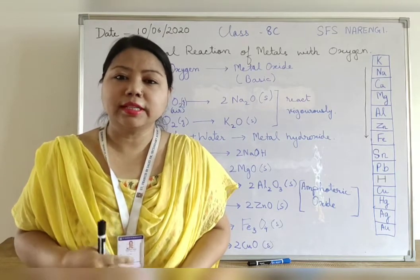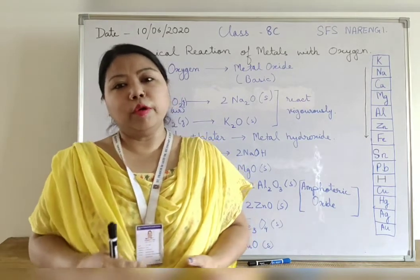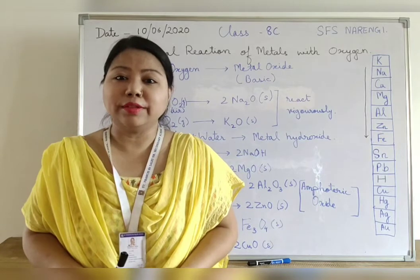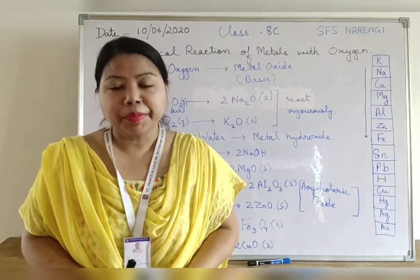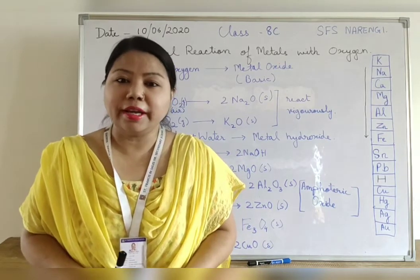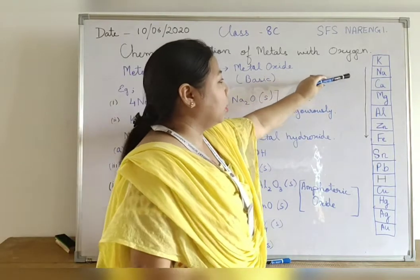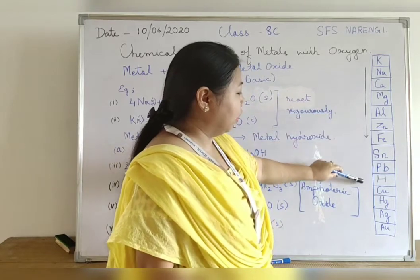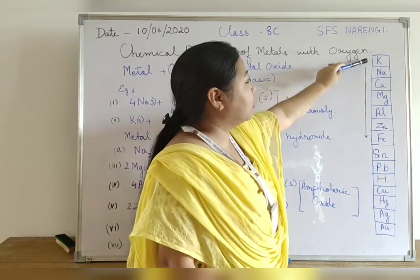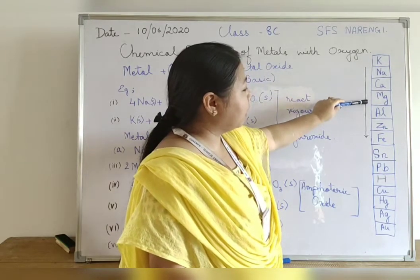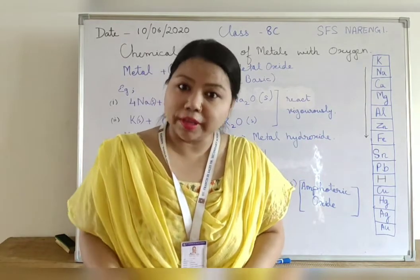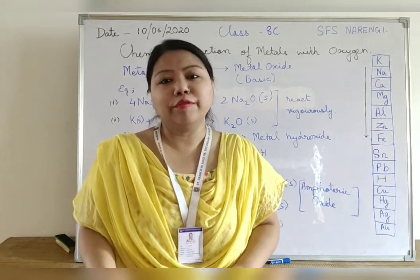First we will discuss how metals react with oxygen. Before that, we need to know the reactivity series. Reactivity series is a list of metals arranged in descending order of their reactivity. The metals are arranged vertically in order of decreasing reactivity. At the top is potassium, then sodium, calcium, magnesium, aluminium, zinc, iron, and it moves down. Some metals are very reactive, some are less reactive, and few are unreactive.